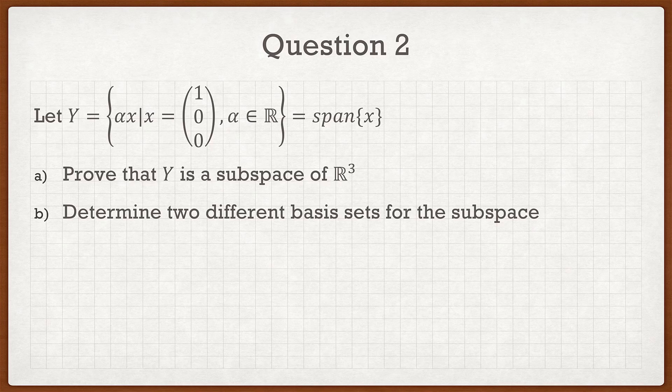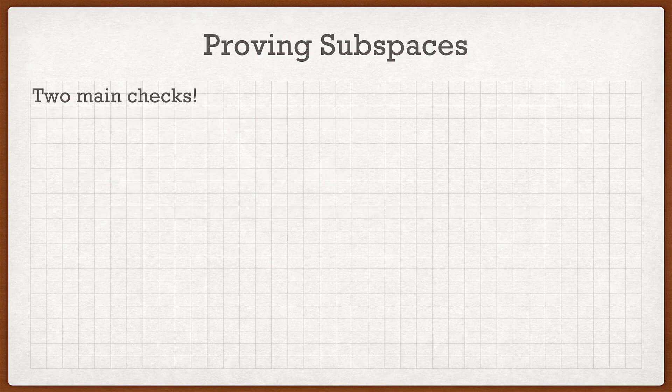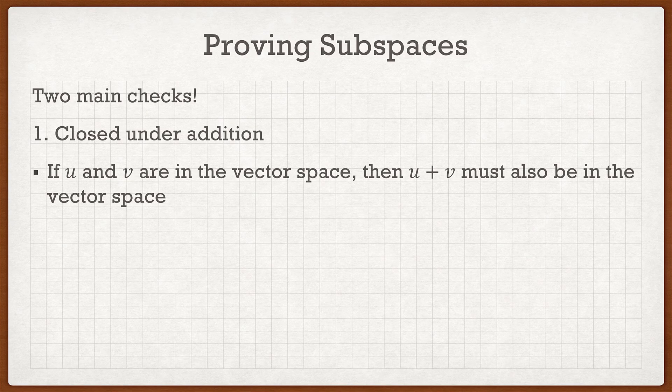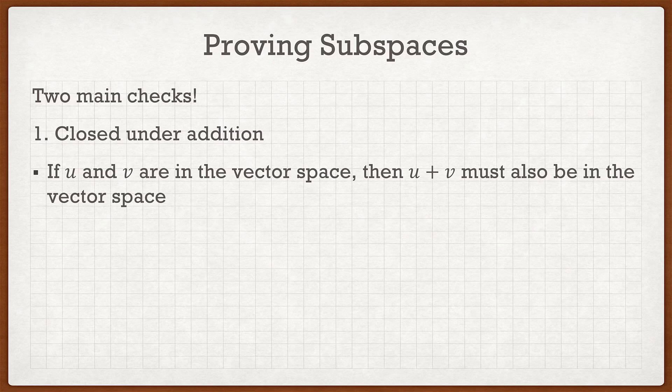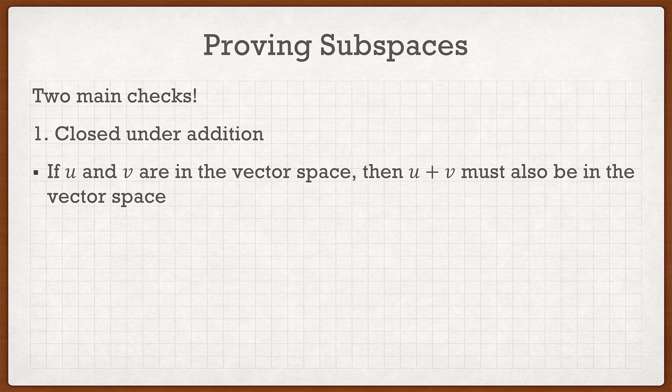So in order to go to question A where we have to prove it's a subspace, we have to do two main checks. The first one is closed under addition, which states that if vectors u and v are in the vector space, then u plus v must also be in the vector space. So that one's going to be kind of the more complicated of the two just because the steps are not always so clear.